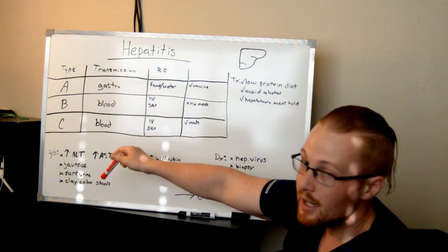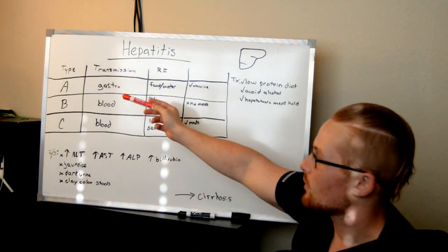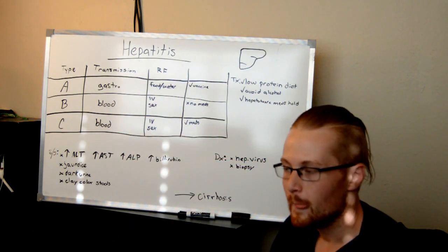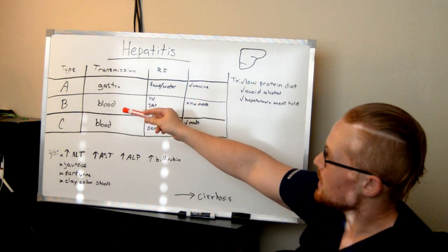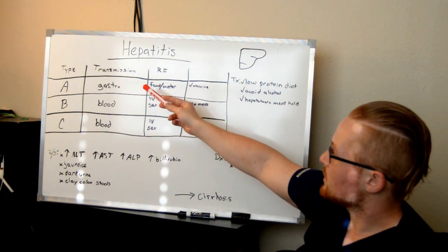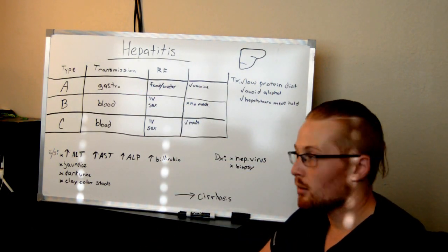There are five types of viral hepatitis, A through E, and we're just going to talk about the first three because they're the most prominent that we would be discussing. As you can see, type A is a virus that has fecal oral route. I put gastro here.